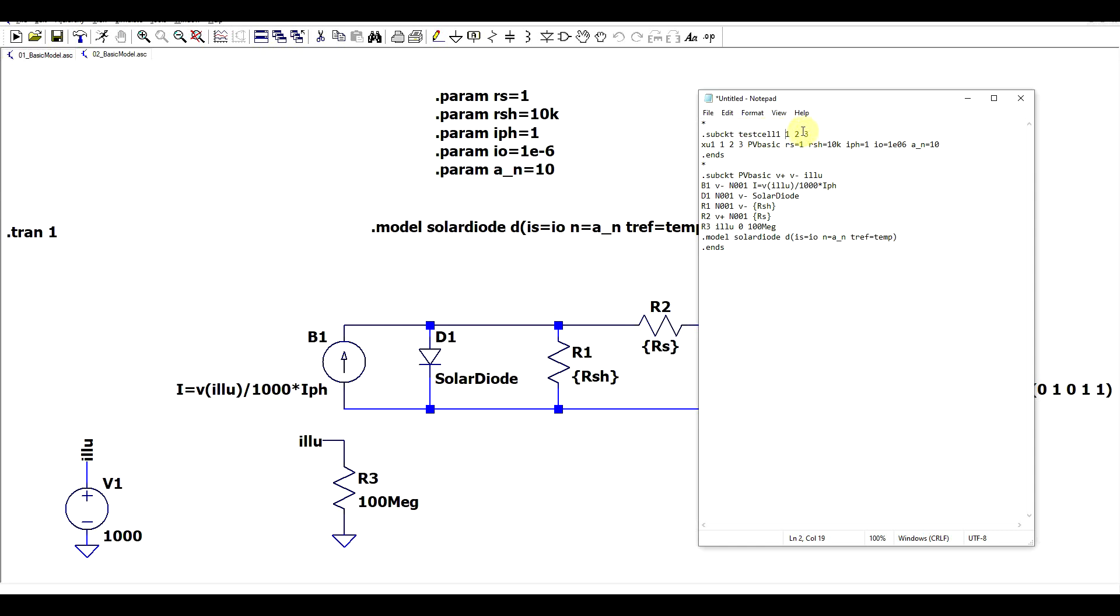Now to be actually able to use this component we need to define a new component where all of the various parameters that are needed inside of the model are defined. So here I defined the subcircuit test cell 1 that has three pins connected to nets 1, 2 and 3 and under this component we have another component XU1 which again has pins 1, 2 and 3 connected to the same nets which is of type component PVBasic but also has the five parameters attributed to it. This way you can make as many components as you want using the basic photovoltaic cell model.